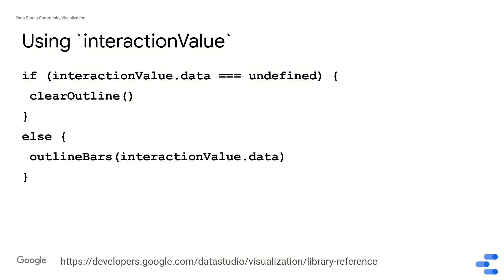Else, if it's not undefined, then it's currently acting as a filter and I want to outline certain bars, and the data for which bars I should be highlighting is going to be in this dot data object. And so this is how I actually write my own code. In summary, I've given you a quick overview of this interaction value object and how you can use it to keep track of whether or not and how your visualization is acting as a filter for other components on your dashboard.